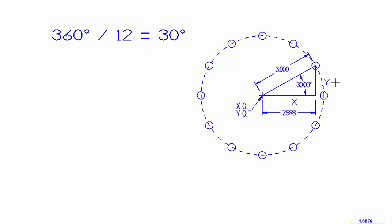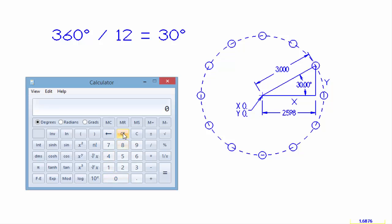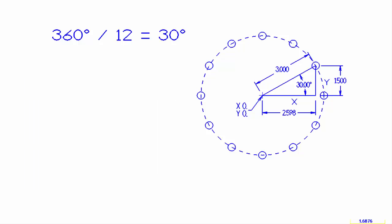We're going to put that dimension on the print because we're going to be using that distance to calculate the y dimension. We'll bring up the calculator, clear it, and this time we take 30 degrees, do the tangent of that 30 degrees, and multiply that times the 2 inches 598. We come up with 1 inch 4999, so we'll round that off to an inch and a half. Now here you have our x and y coordinate for this hole at 30 degrees.